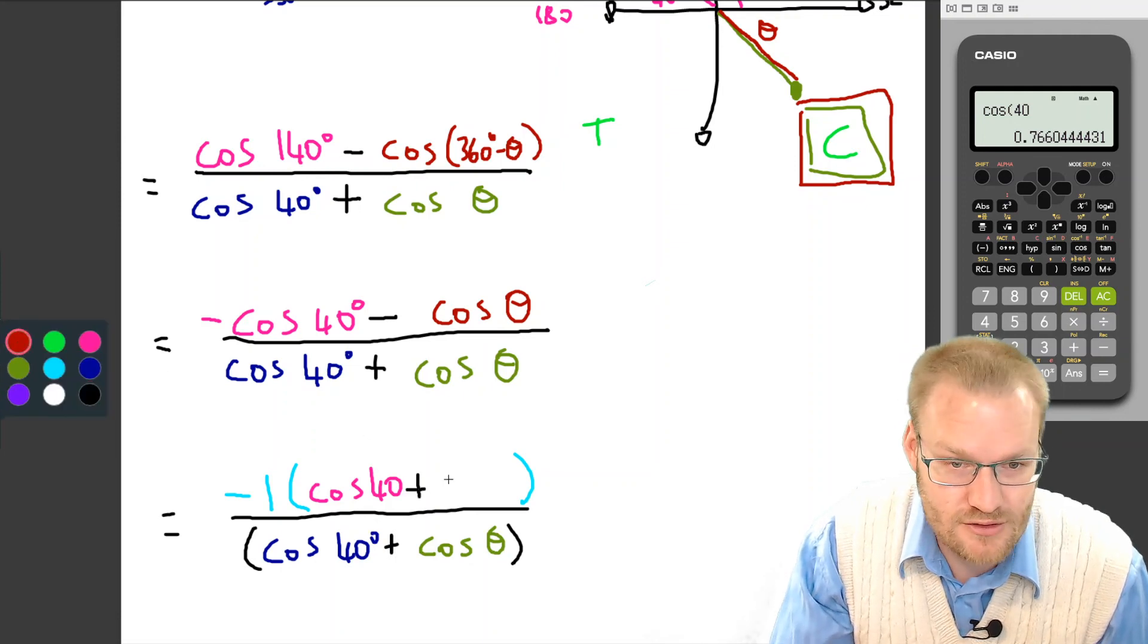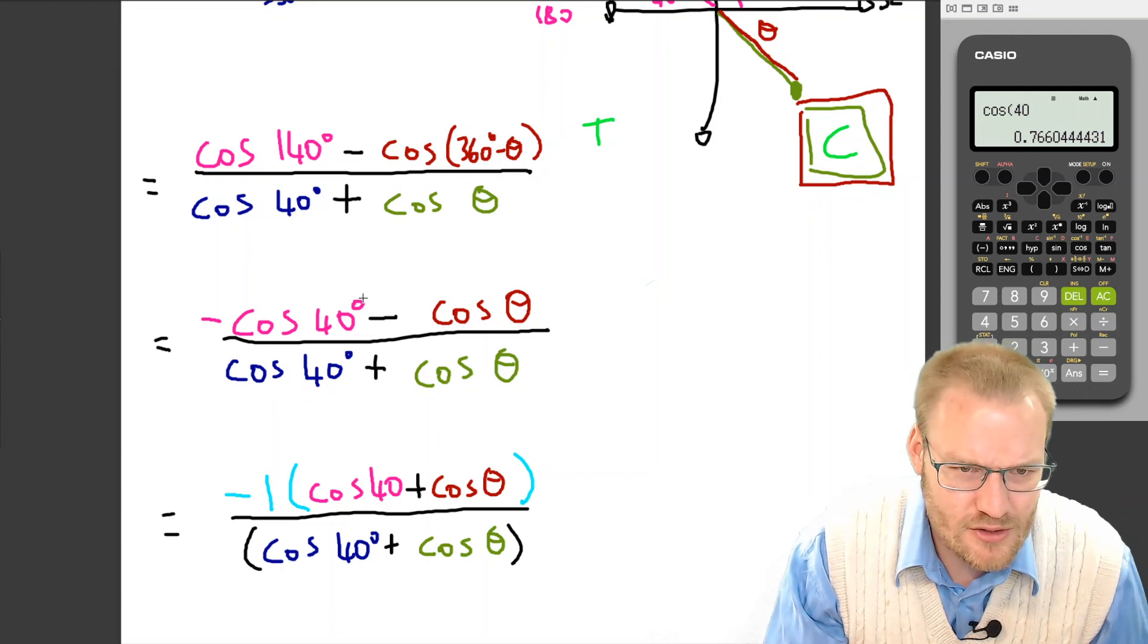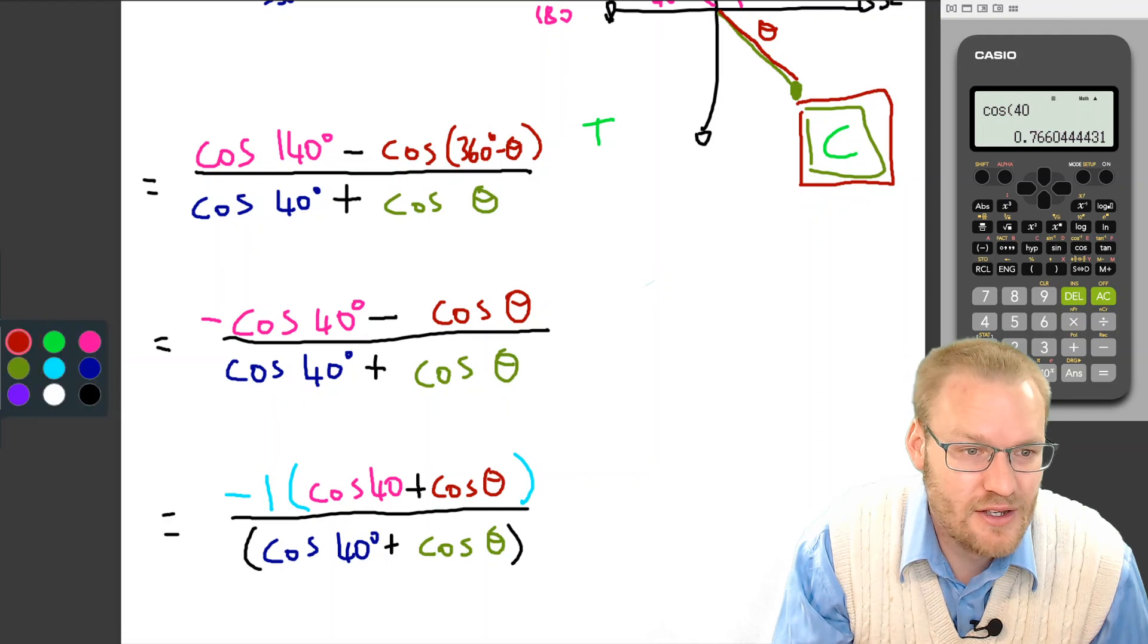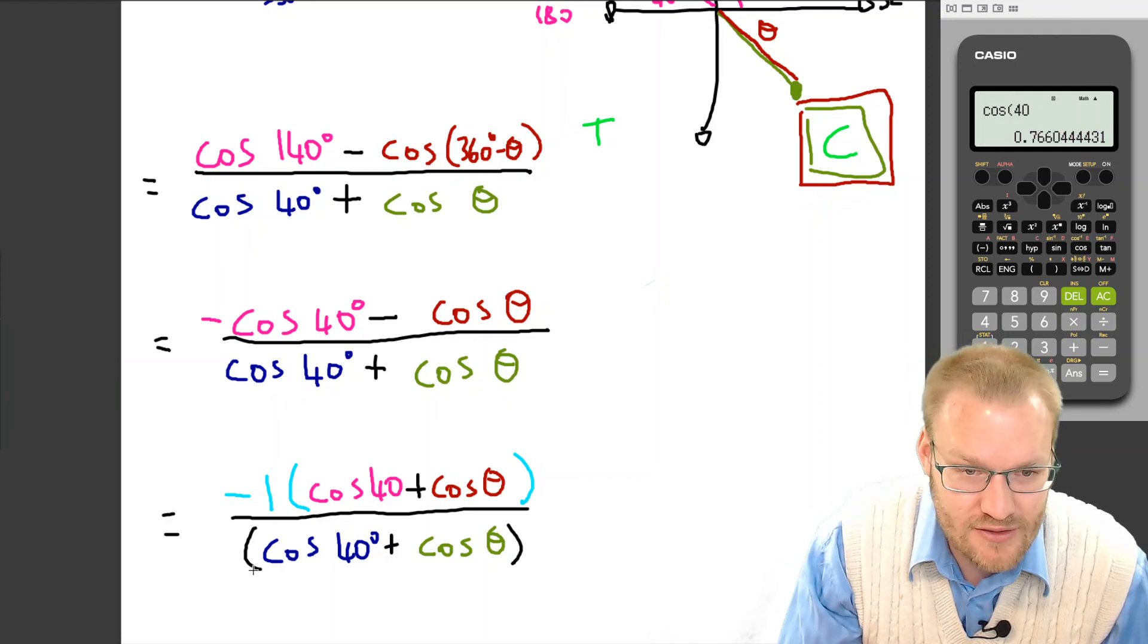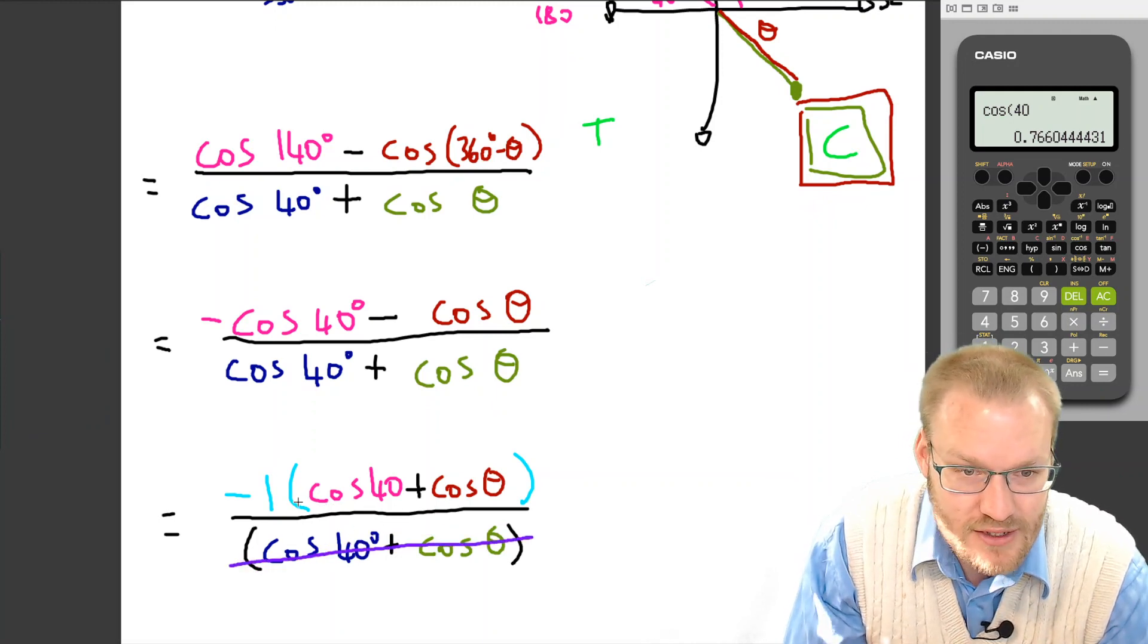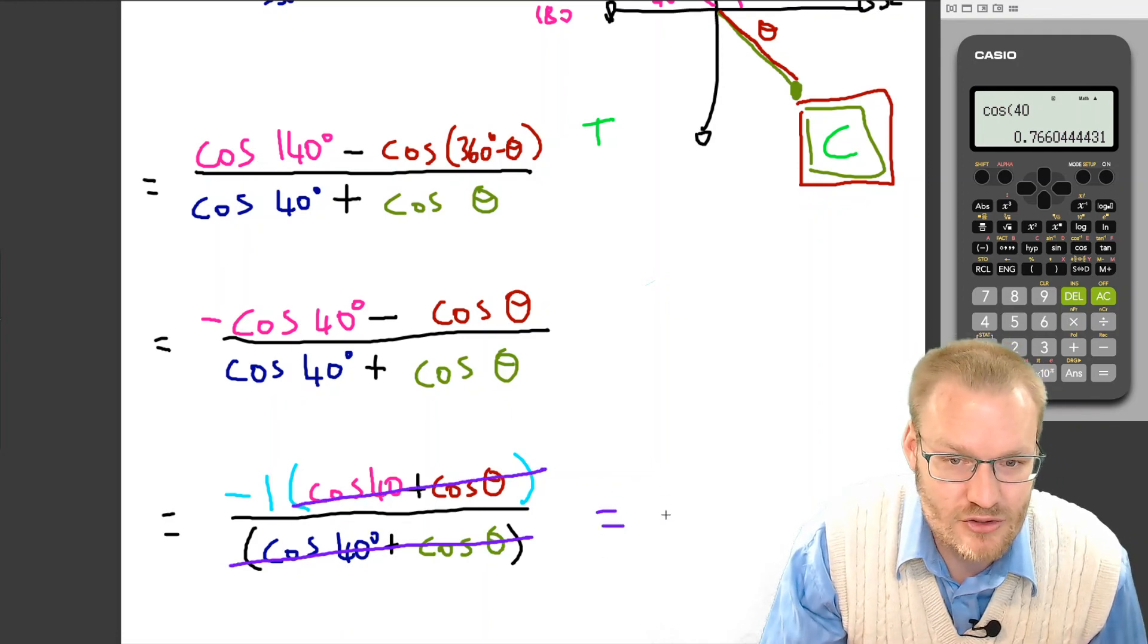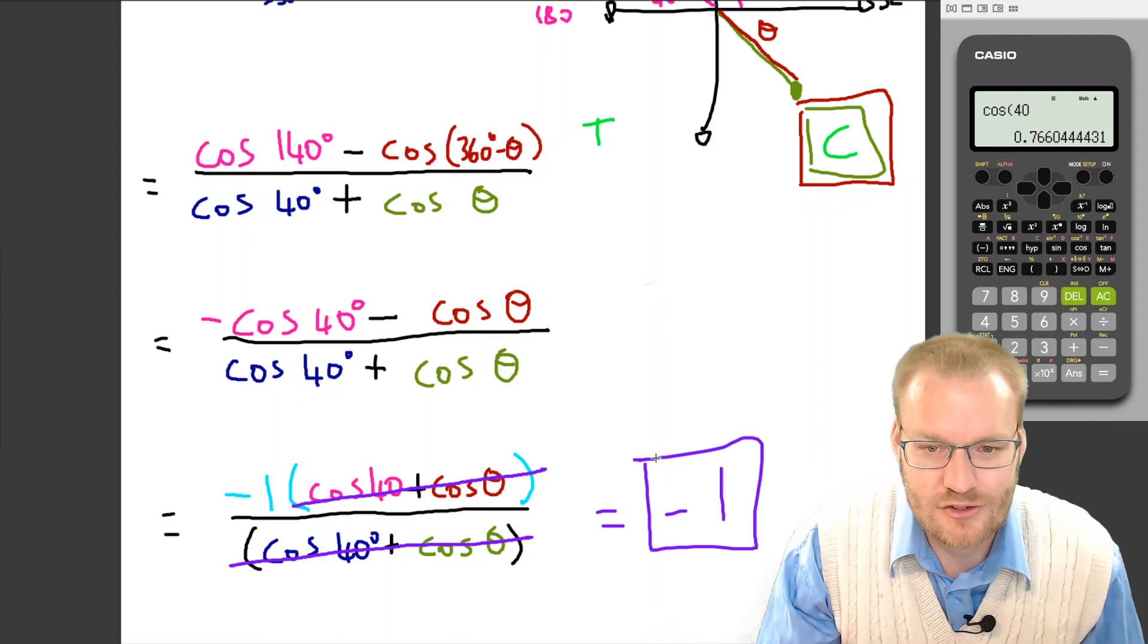In other words, the top and the bottom are exactly the same—one's just the negative of the other. And now we can see, well, there's stuff to be canceled here. This entire bracket is equal to this entire bracket, so we're just equal to -1. Quite satisfactory, isn't it?